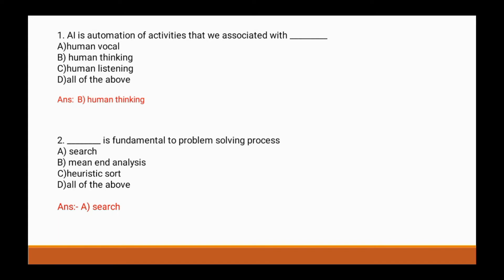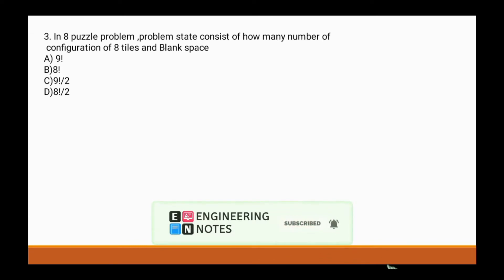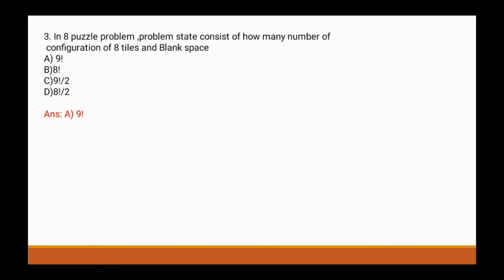Question 3: In the 8-puzzle problem, problem states consist of how many configurations of eight tiles and blank space? Options are: a) 9 factorial, b) 8 factorial, c) 9 factorial divided by 2, d) 8 factorial divided by 2. The correct answer is a) 9 factorial.